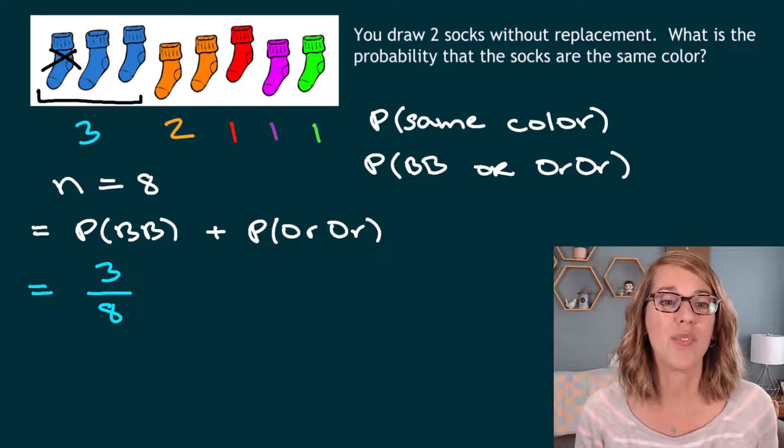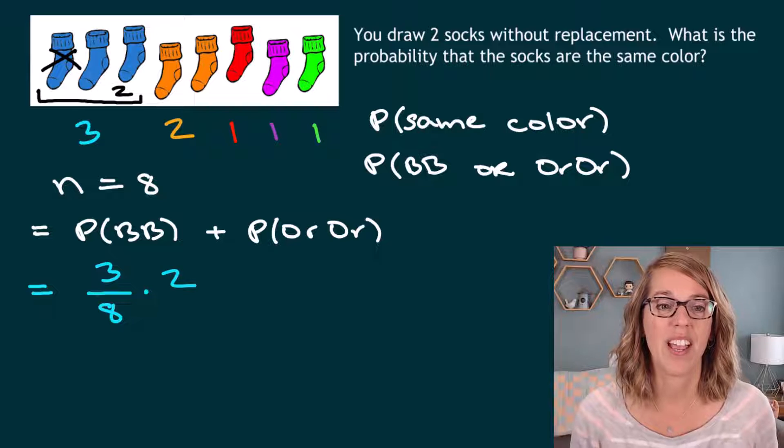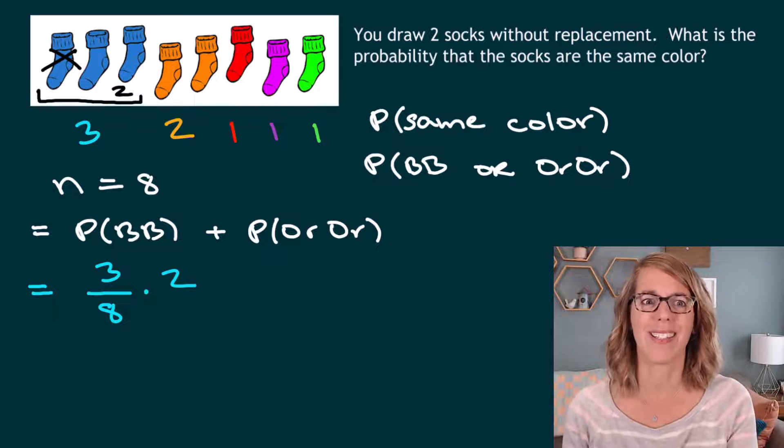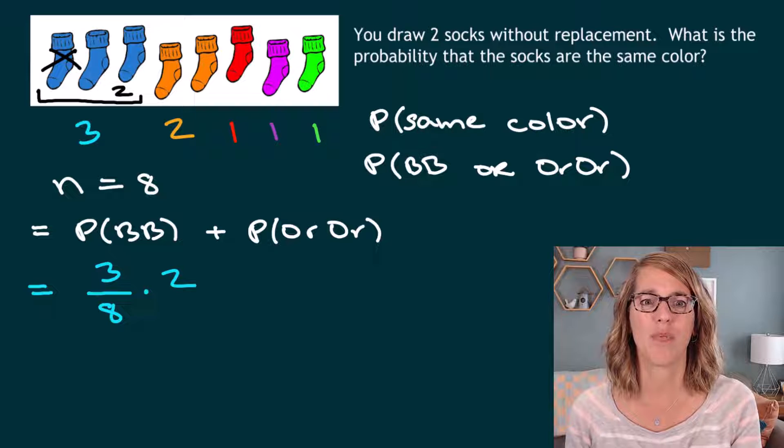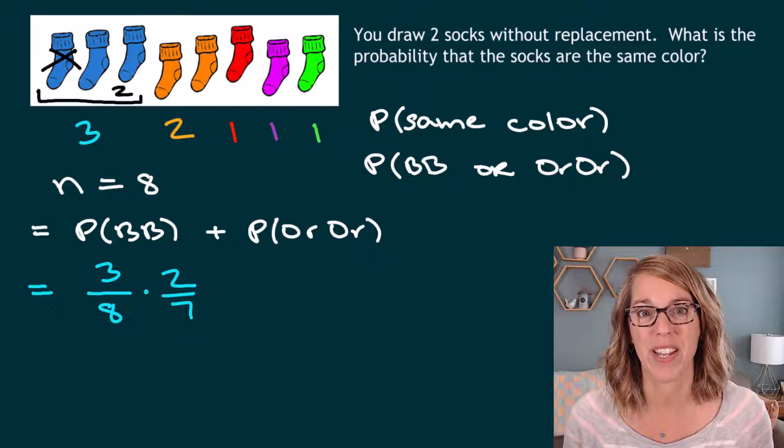Well, there are two blue socks remaining. So that's going to be times two. And I've got one less sock, right? So I've got seven socks remaining. So seven goes in my denominator.